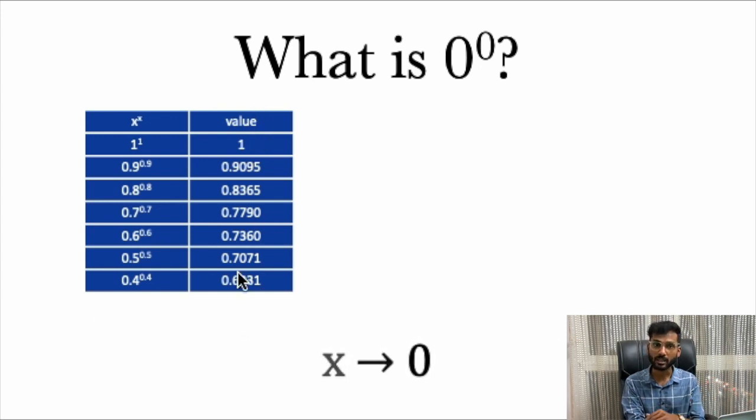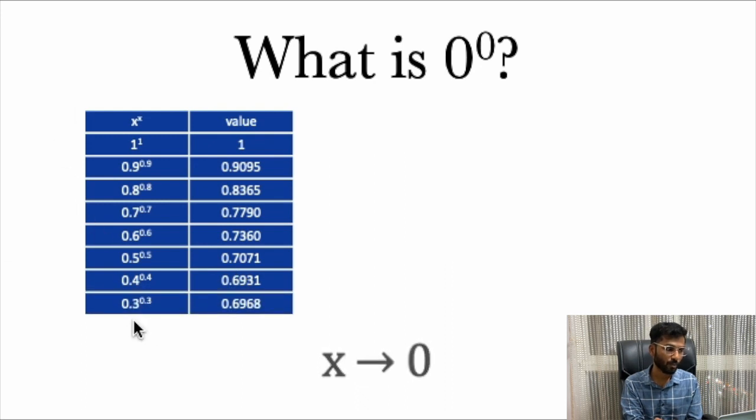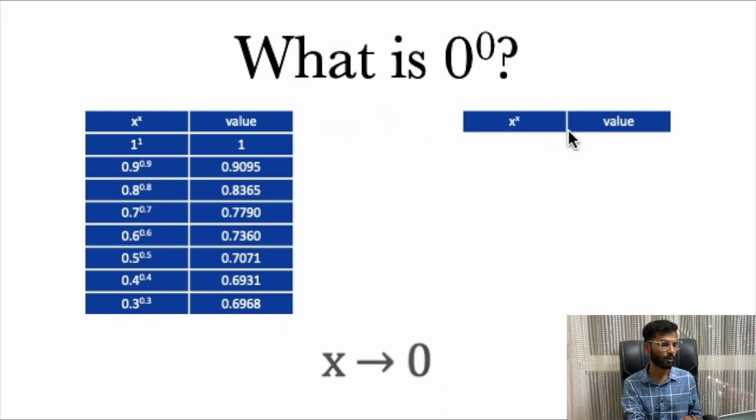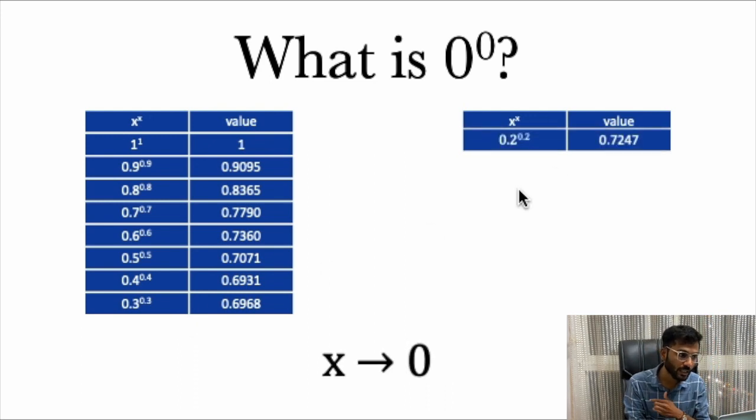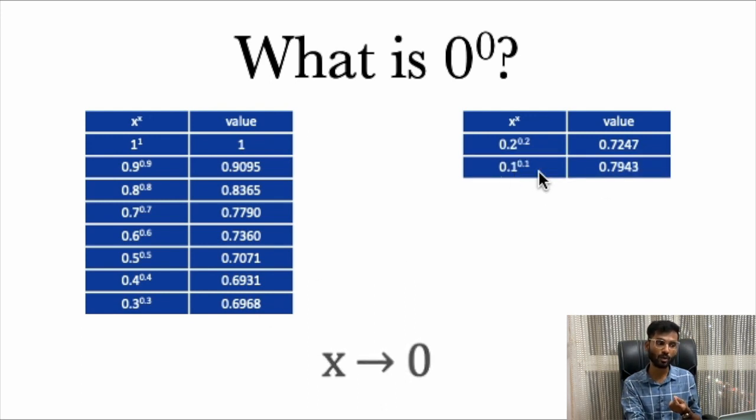Let's check it for the next number. 0.3^0.3 is 0.6968. Wait a second, that is greater than our previous number. Till now the numbers were reducing but for 0.3^0.3 is 0.6968 which is greater than previous value, so the number has been increased. Let's check for the next number. 0.2^0.2 is 0.7247. It's increasing now.